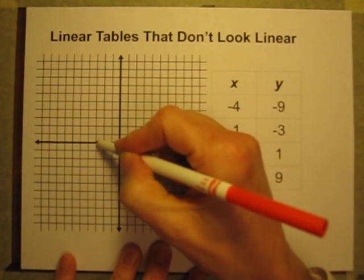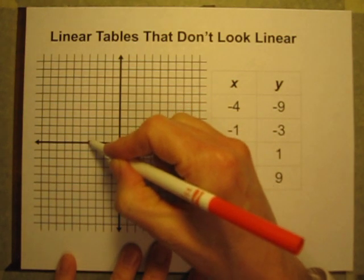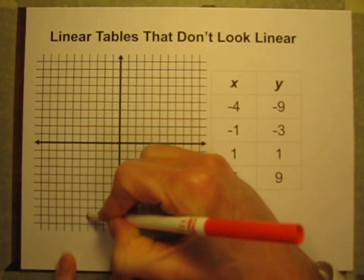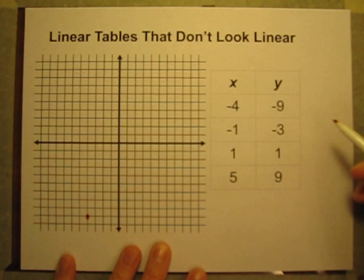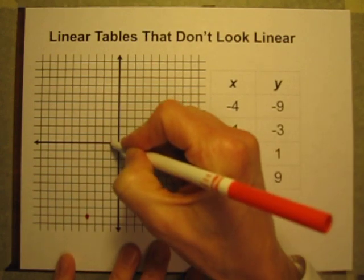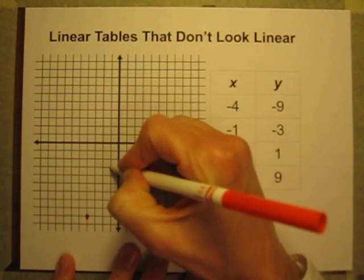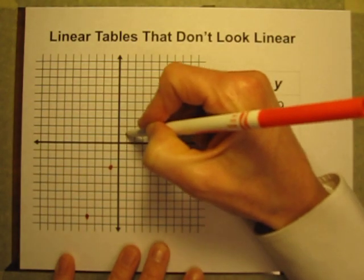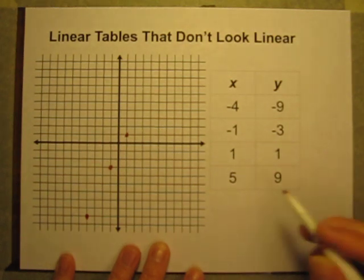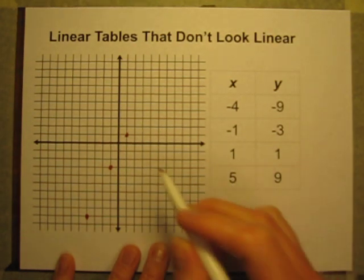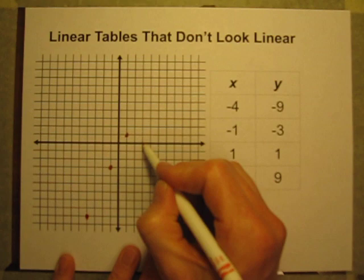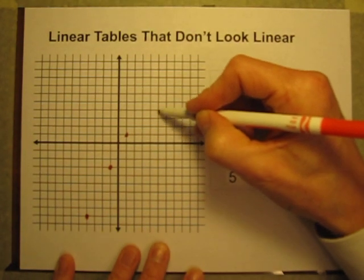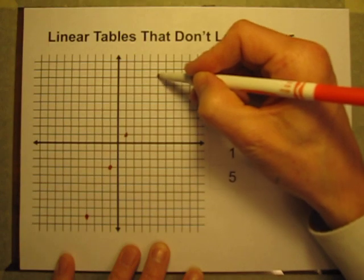Negative 4, negative 9. That's 4 to the left, down 9. Negative 1, negative 3. That's 1 to the left, down 3. X is 1, Y is 1. That's 1 to the right, up 1. And X is 5, Y is 9. That's 5 to the right, up 9.